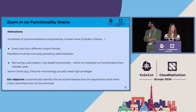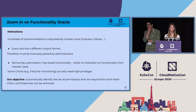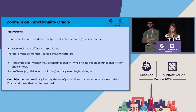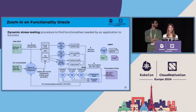Another issue is that removing a functionality may break the application. For example, if we consider the Falco monitoring tool, it actually needs access to the host network and to be privileged, even if it is not secure — it will raise many alerts from checker tools like Checkov. But it is needed because it must analyze the network traffic and system calls from the containers. We had to design a tool that automatically identifies the minimal set of permissions needed by the chart to function.